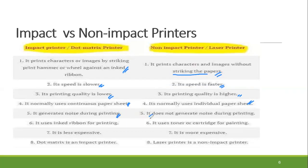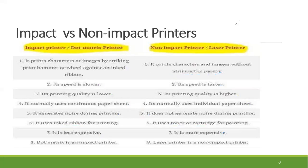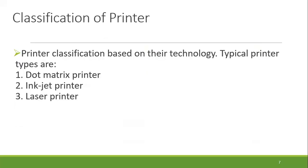The noise is created by the impact interaction. There is a toner used in the laser printer, and a cartridge used in the inkjet printer. The laser printer uses toner, and the inkjet printer uses a cartridge. In terms of cost, one is less expensive and the other more expensive. Finally, an example of an impact printer is the dot matrix printer, and the laser printer is a non-impact printer. This is a classification based on their technologies.